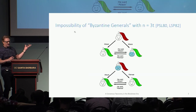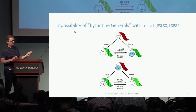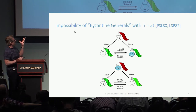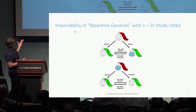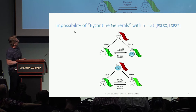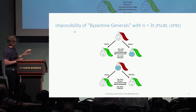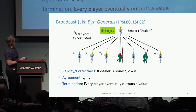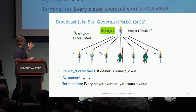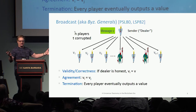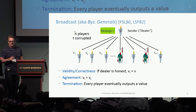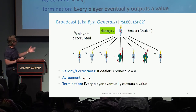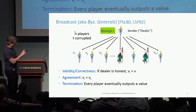Consensus is a somewhat ancient problem, as this slide shows, where you can see impossibility results for solving this problem — in this case, the Byzantine General's problem, as Lamport et al. formulated it in the early 80s. This is like the broadcast version of the problem, where there is a single source and all parties have to agree on what the result is through a protocol.